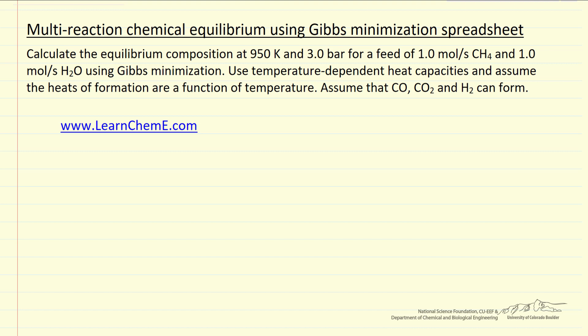In a separate screencast, I described how to solve this chemical equilibrium problem where we have more than one reaction taking place. We solve it using Gibbs minimization, and what I want to discuss here is the spreadsheet that we use for this calculation.